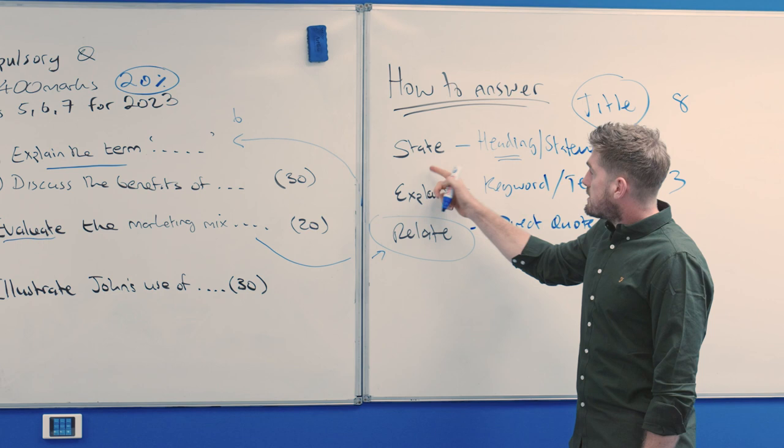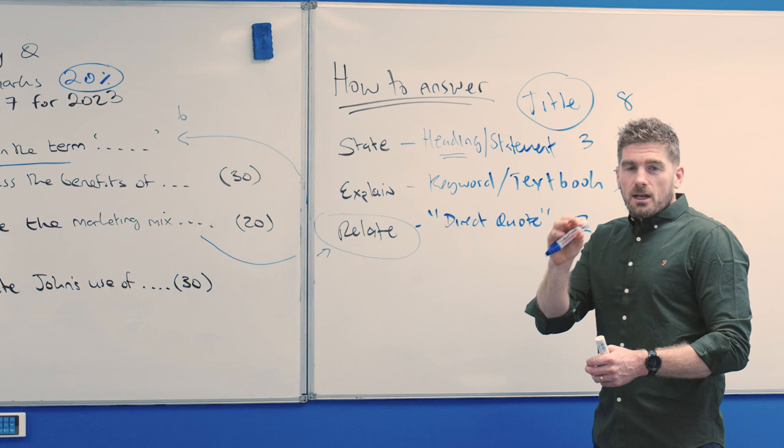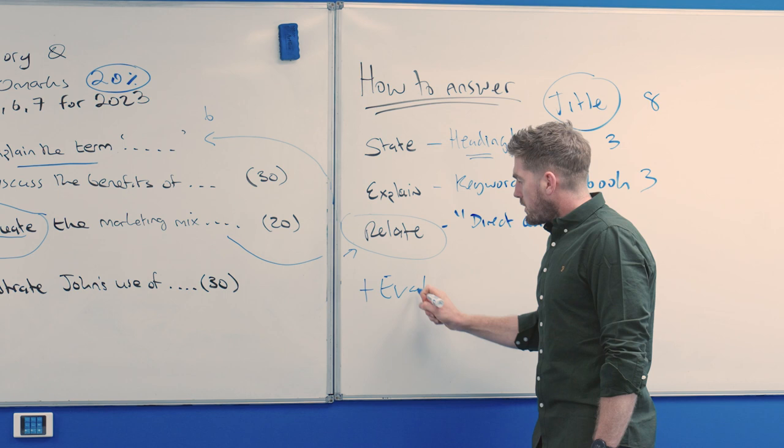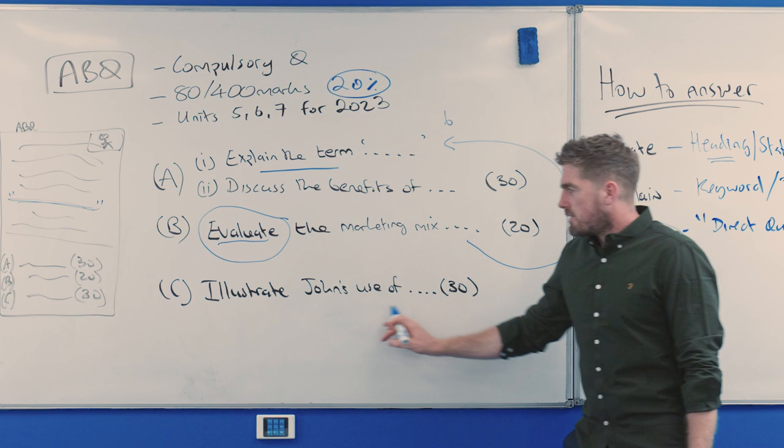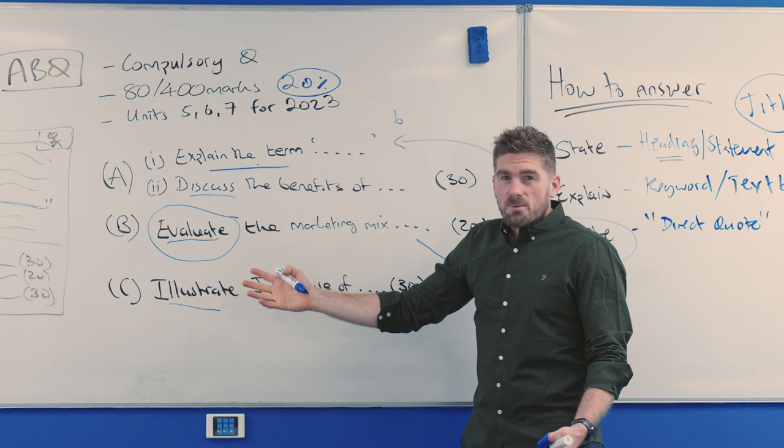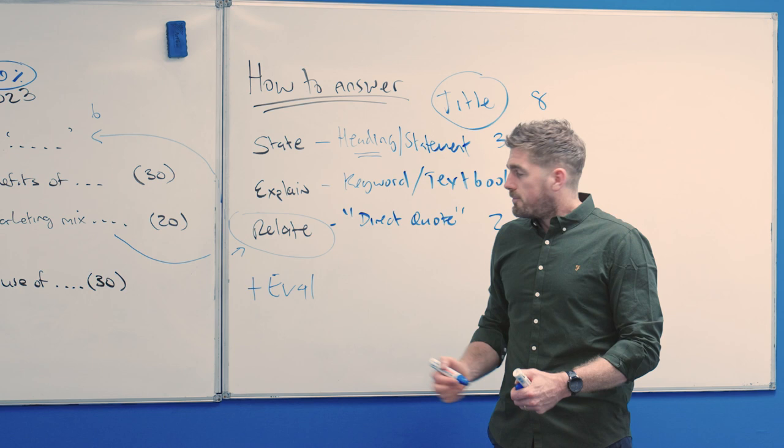For B you might evaluate the marketing mix and again how that would slightly differ is you'd state say your product, you'd explain the keywords around product like USP and packaging branding, you'd give your direct quote from the ABQ text whatever it is like they developed a logo or they put it on the packaging and then in this case you would also need to evaluate it. So evaluate would just be a little bit different that at the end you would need to put in an evaluation for each of the points. An evaluation would be give your opinion and then you back it up and you can't just repeat the keywords you've already given. And then for this one illustrates John's use of, that could be the other outcome verbs we've had. Explain the term, discuss, evaluate and illustrate. When you're explaining one term you don't need to link. Discuss and illustrate for ABQ tend to be the same thing you just state explain relate and then for your evaluate you would state explain relate with your direct quote and then also give your opinion on it and justify that opinion without repeating yourself.